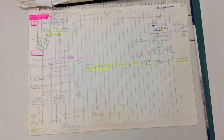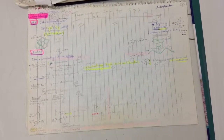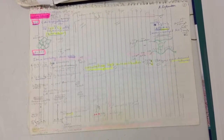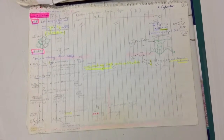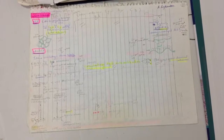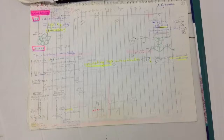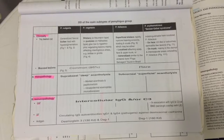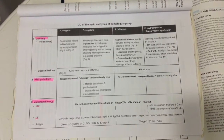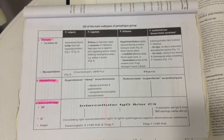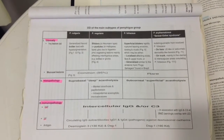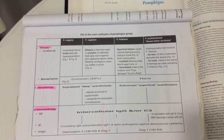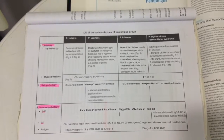Indirect immunofluorescence shows titers correlating with disease activity in pemphigus vulgaris. In all pemphigus group, there are circulating IgG autoantibodies — IgG1 and IgG4 — against desmosomal cadherins. Direct immunofluorescence shows intercellular IgG and C3, plus basement membrane zone in erythematosus. Indirect immunofluorescence shows circulating IgG1 and IgG4 autoantibodies against desmosomal cadherins.